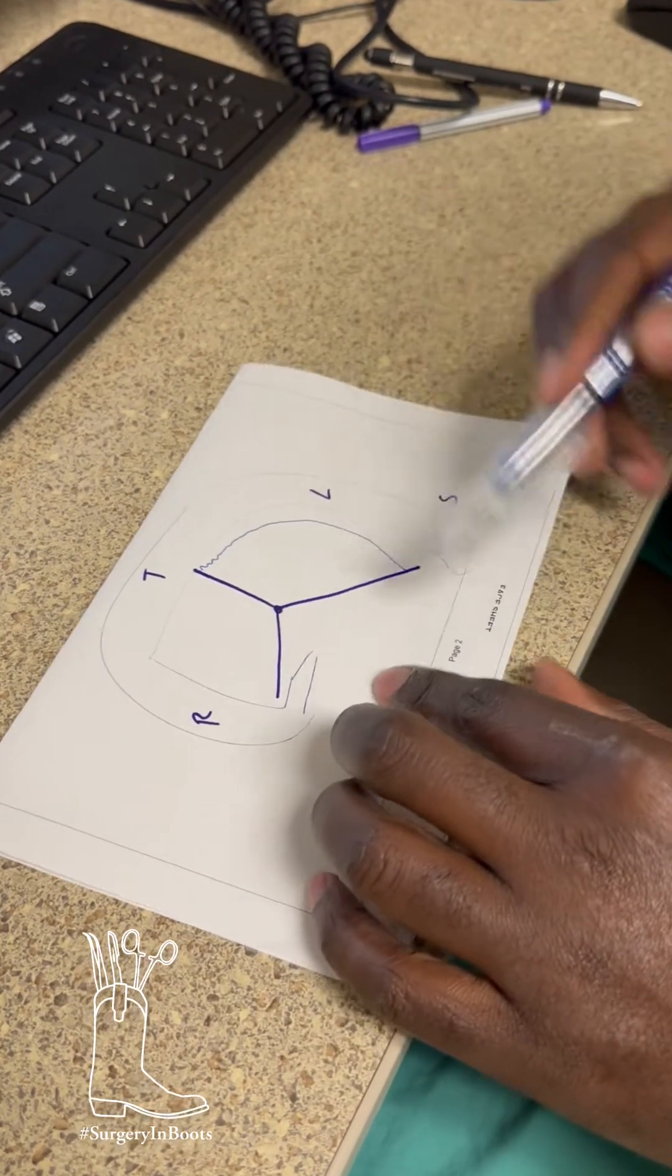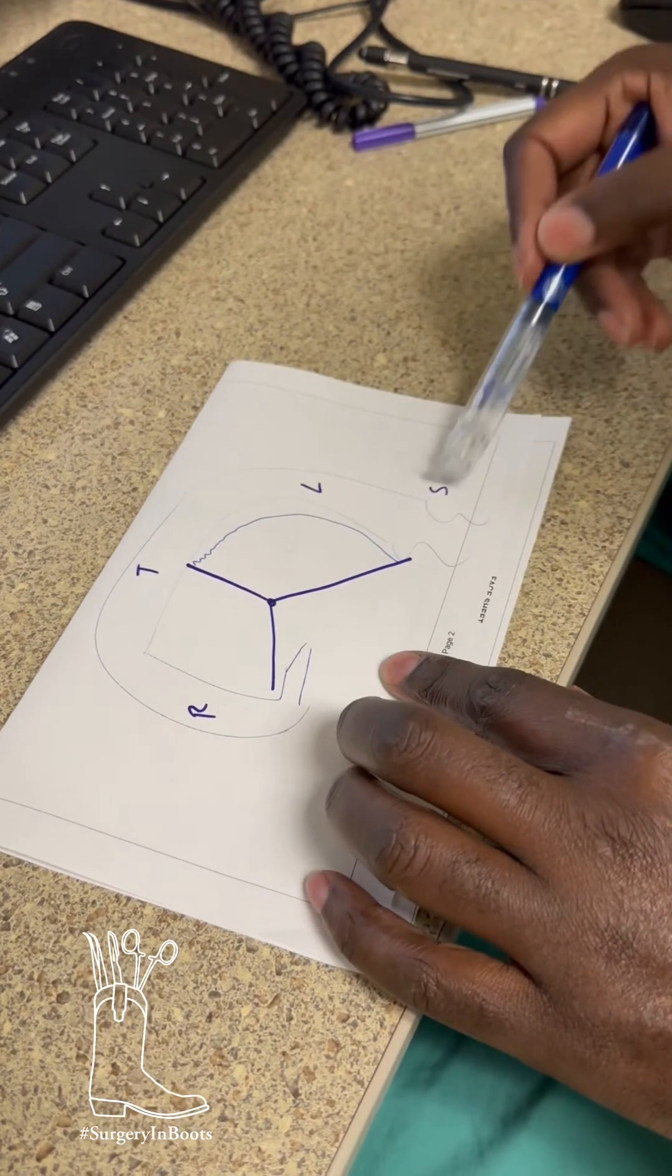Okay, so what happens is this is right colon, transverse colon, left colon, sigmoid colon.